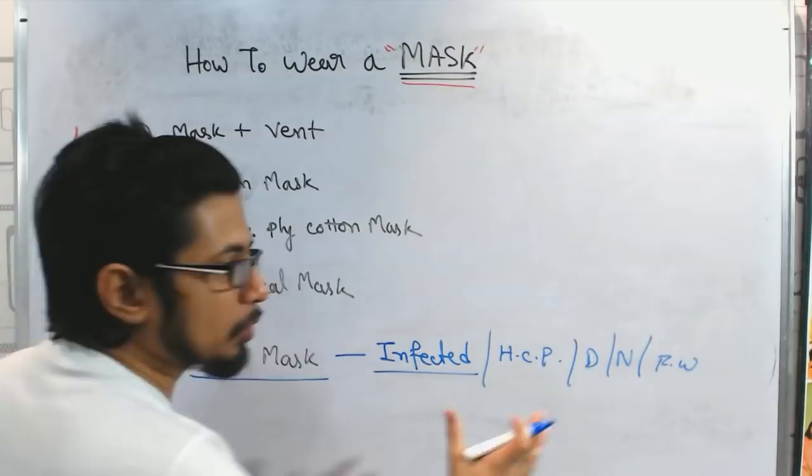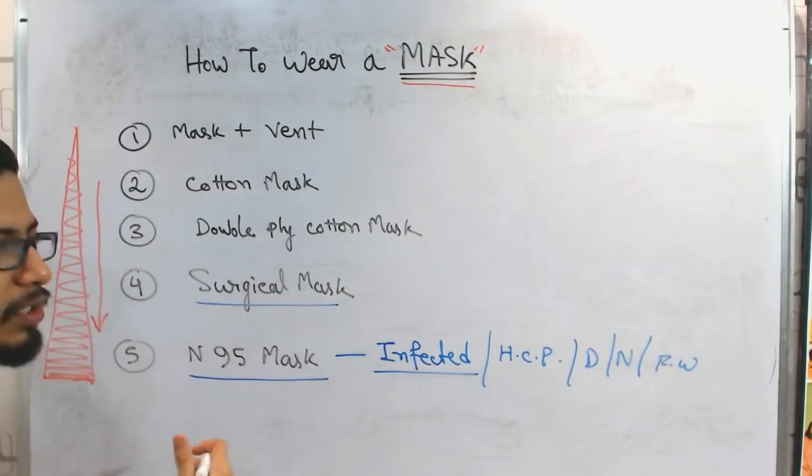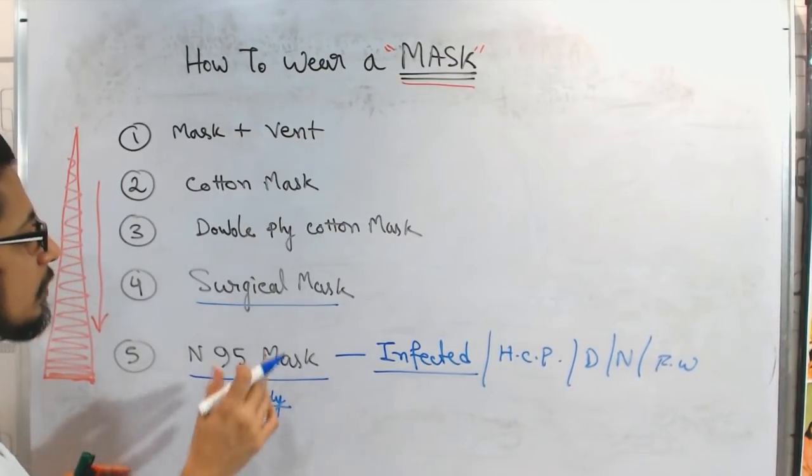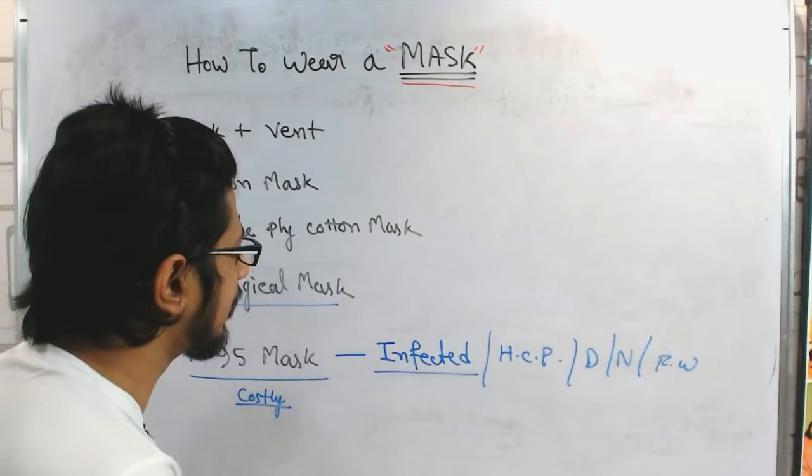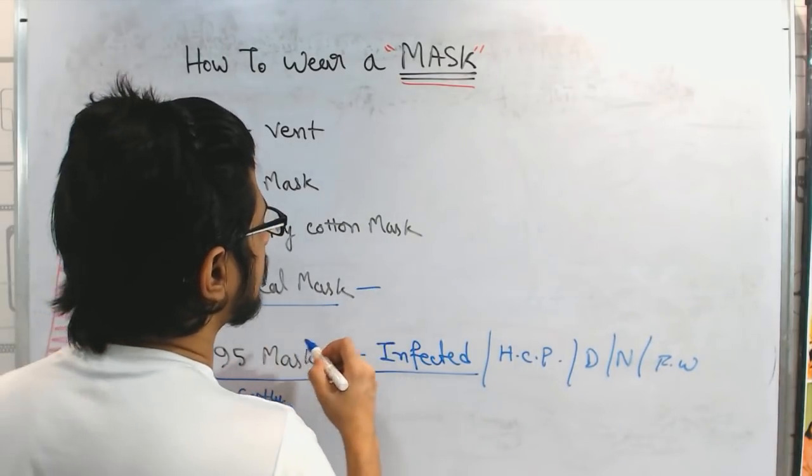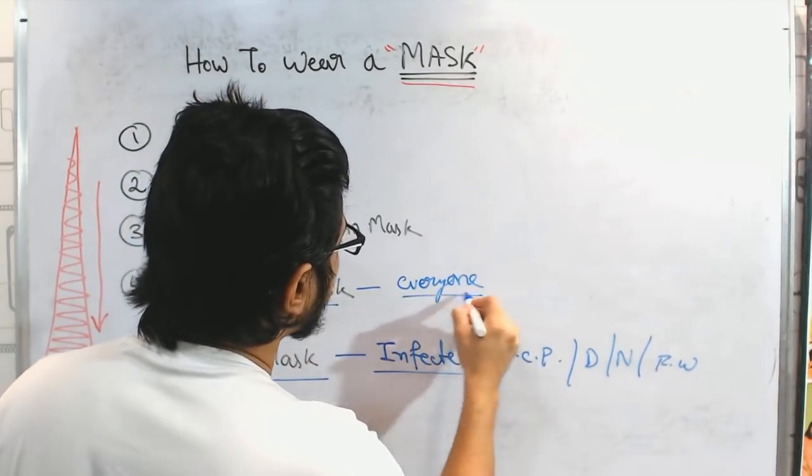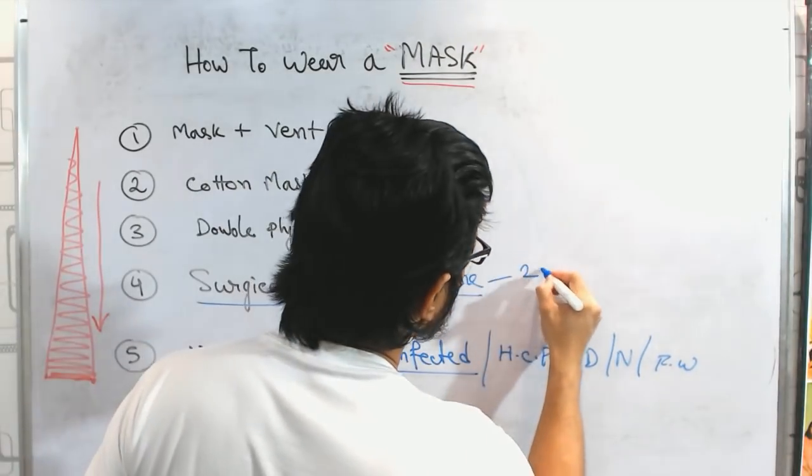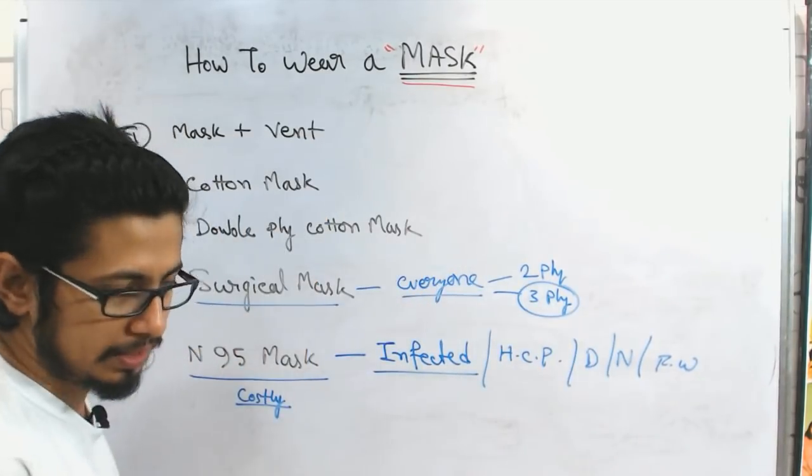Apart from the hospital setup, we don't need N-95. The second one is the surgical mask. You know N-95 is costlier, it is costly. The low cost mask is surgical mask, which is very similar in terms of protecting you and the surgical mask cost very low. And this is to be worn by everyone. I recommend everybody to wear this surgical mask and there are two ply surgical mask and there are three ply surgical mask.